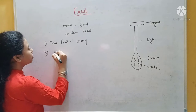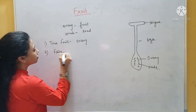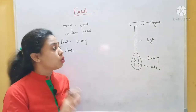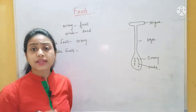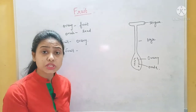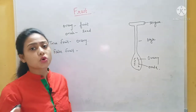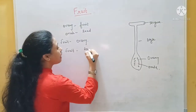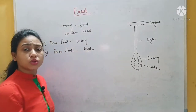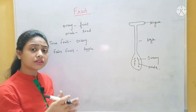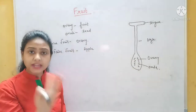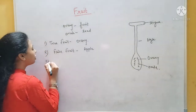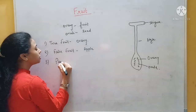Now the second category is the false fruit. What is the false fruit? Along with the ovary, if the thalamus or any other part of the flower is also involved in fruit formation, that is called the false fruit. For example, apple. In apple, the thalamus part is converted into the fleshy edible part — that is the part we consume.